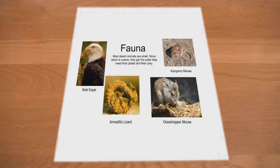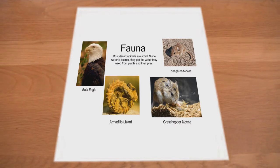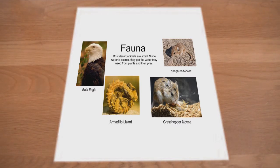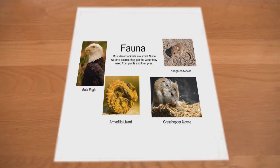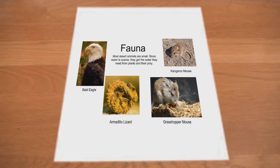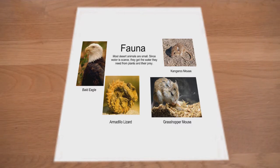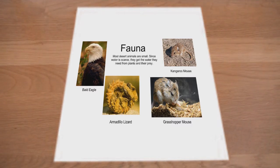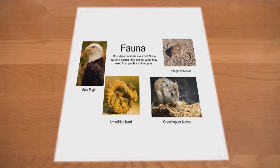Along with plant life in the desert, there are also fauna as well. The bald eagle, armadillo lizard, kangaroo mouse, and grasshopper mouse are a few examples of the animal life inhabiting this biome. As water scarcity is once more a key factor resulting in change, the animals have a tendency to be small and mainly get their water from plants or their prey.